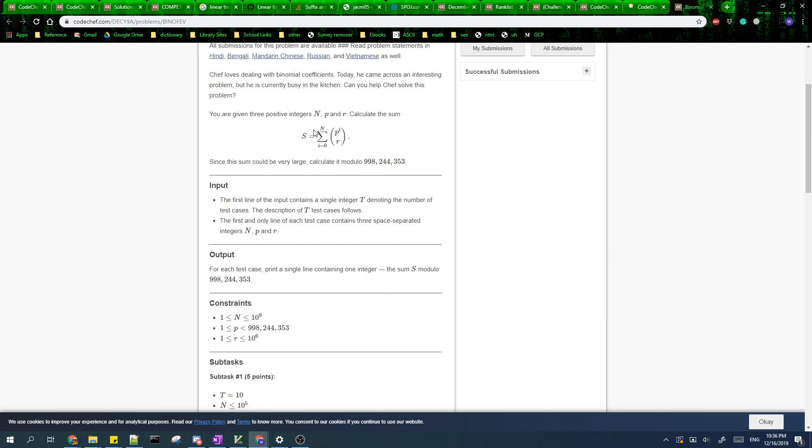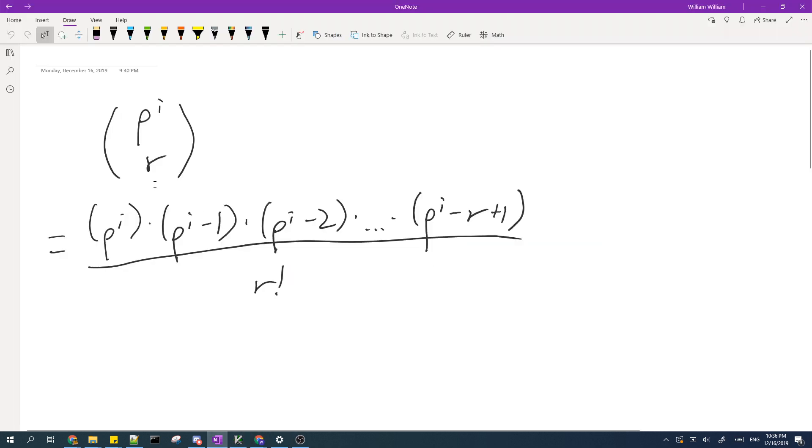This suggests that maybe we should expand this binomial coefficient into this form. I know that there are R factors on the top and the bottom is R factorial, which is a constant. So this doesn't affect the solution much. From now on we'll just ignore this.